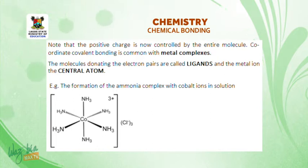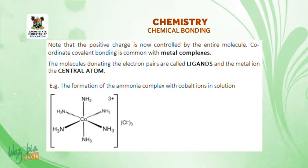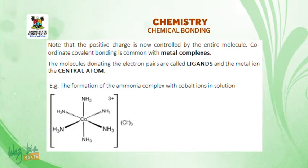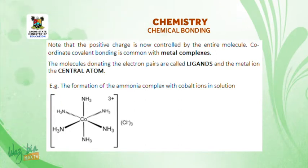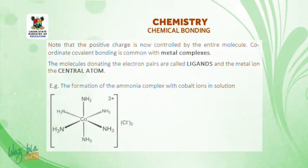The molecules donating the electron pairs are called ligands and the metal ion is the central atom. For example, in the formation of ammonia complexes with cobalt ion in solution, six ammonia molecules are attached to the cobalt ion, and the cobalt ion forms the central atom.